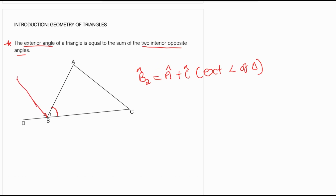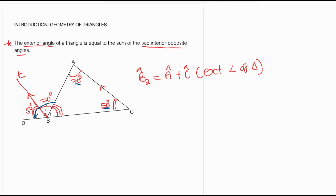If we measure this angle, we may find that it's 50 degrees, and then we measure this angle, we find that it is 70 degrees. This angle of 50 degrees and this angle here are corresponding angles, because we said these lines are parallel. So this angle is 50 degrees. And then the 70-degree angle is equal to this angle here because they are alternate angles. So the whole angle B2 is 50 plus 70, which is just the same as the 50 plus 70 there. That's why we say the exterior angle of a triangle is equal to the sum of the opposite interior angles.